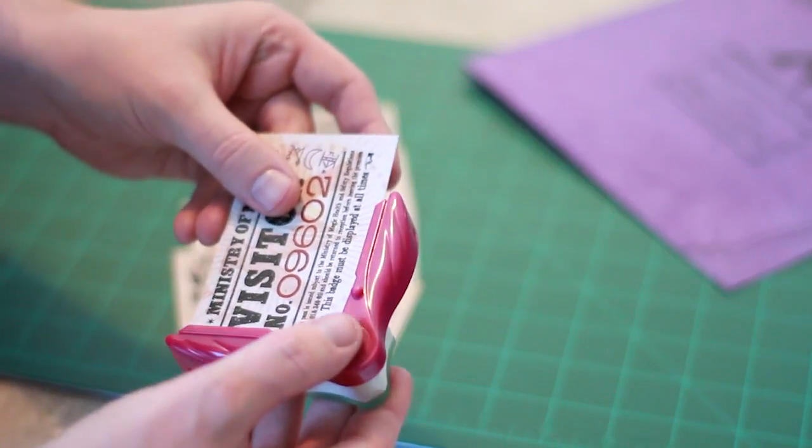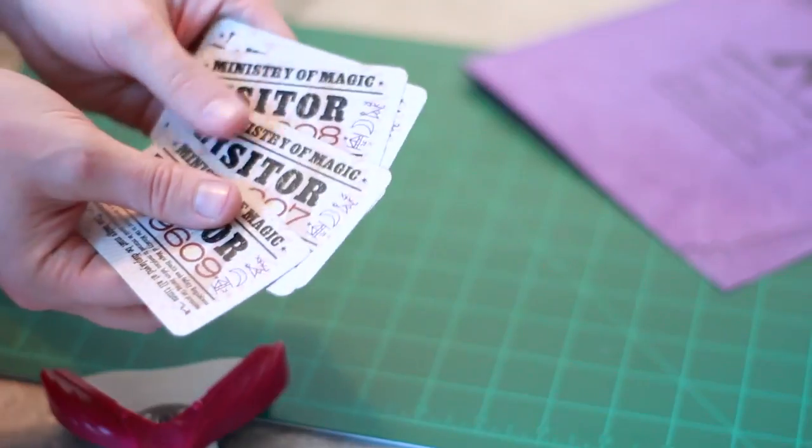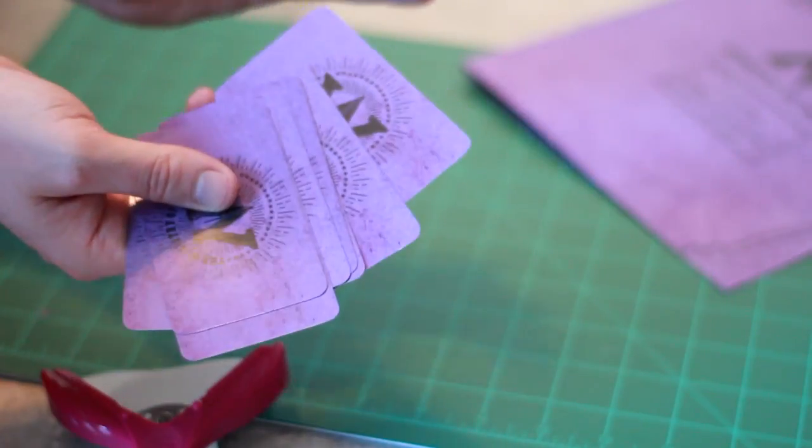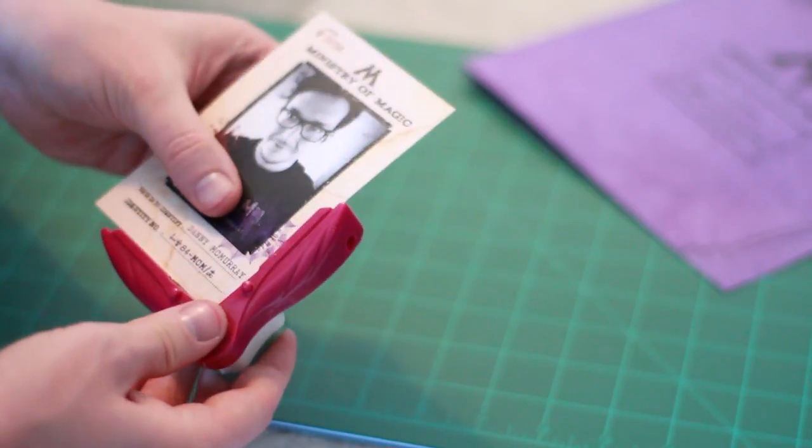With these visitor cards, we're just going to round the corners with a corner rounder. So all of these visitor badges should now be rounded, and then we're also going to want to round this photo ID card.